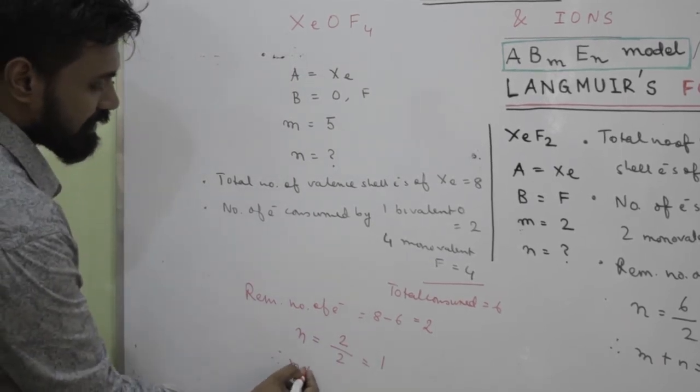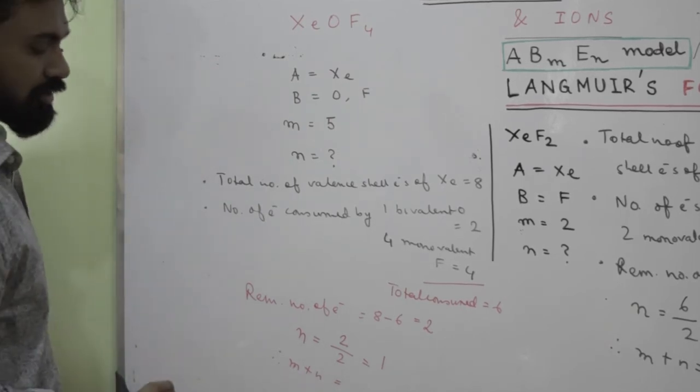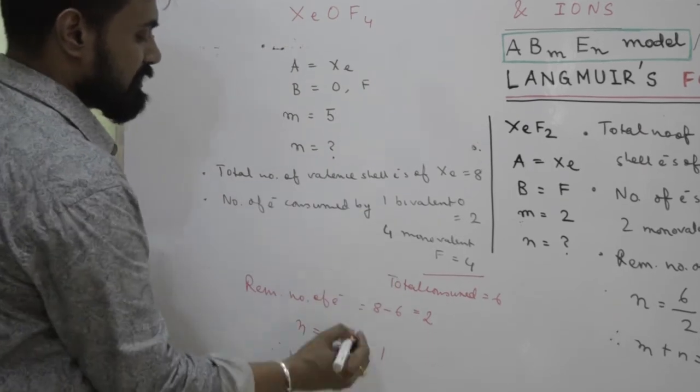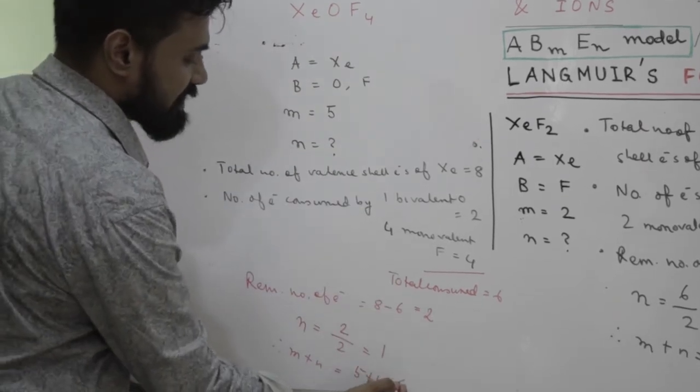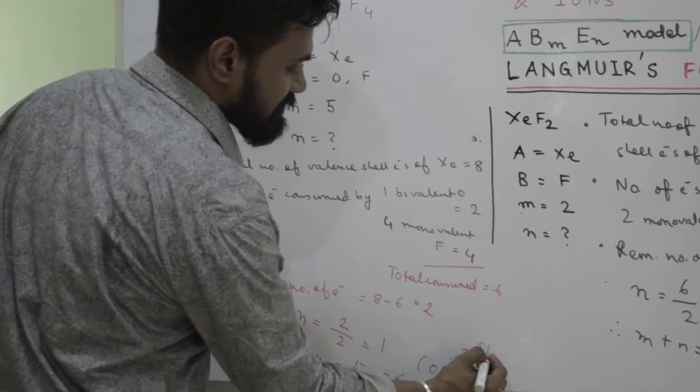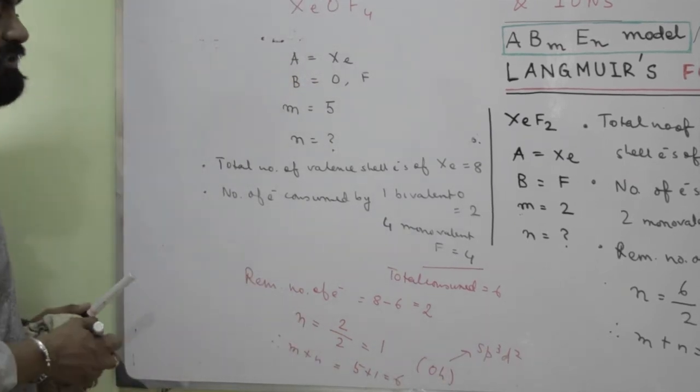So what is the occupancy number? I think students you still remember what is m plus n. It is called sometimes coordination number also. So m plus n here comes to be 5 plus 1, that's 6. So 6 stands for octahedral geometry. Hybridization, obviously you know, 1 plus 3 plus 2, that is sp3d2.